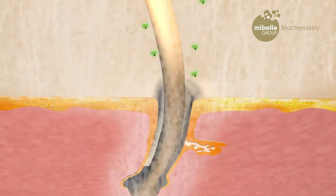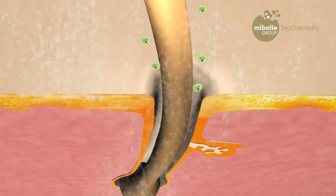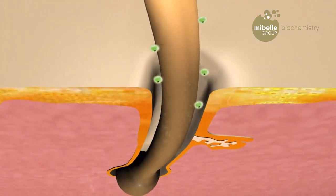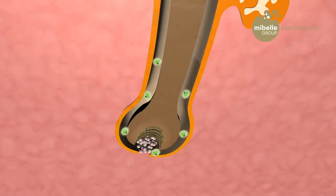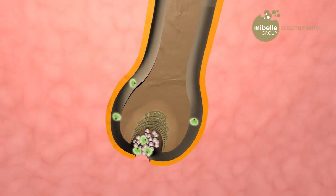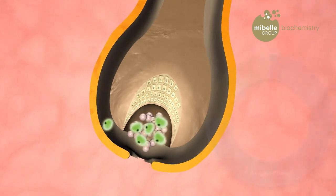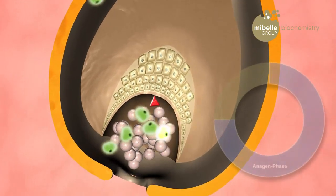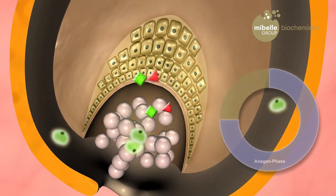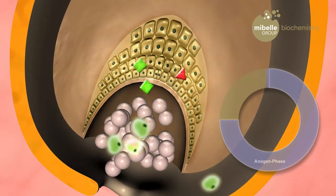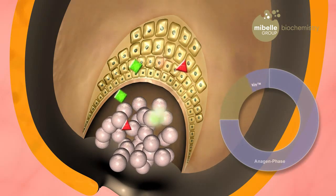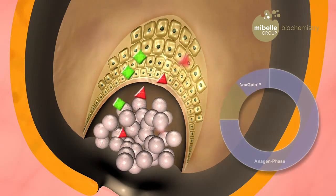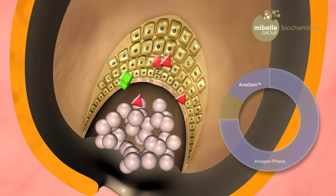The nutrients extracted in Anagaine penetrate into the deepest part of the hair bulb, where the hair matrix embeds the dermal papilla cells. In a novel mechanism, Anagaine stimulates the dermal papilla cells to produce specific signaling molecules required to successfully initiate the growth of new hair.